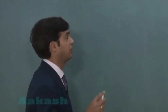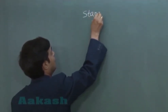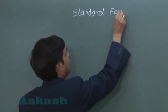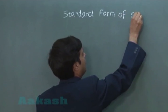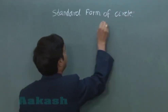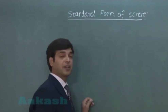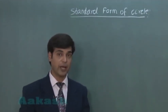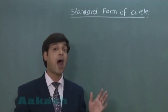Let's talk about the standard form of the circle. One standard form of circle, considered from the definition, is x minus h whole square plus y minus k whole square is equal to r square.